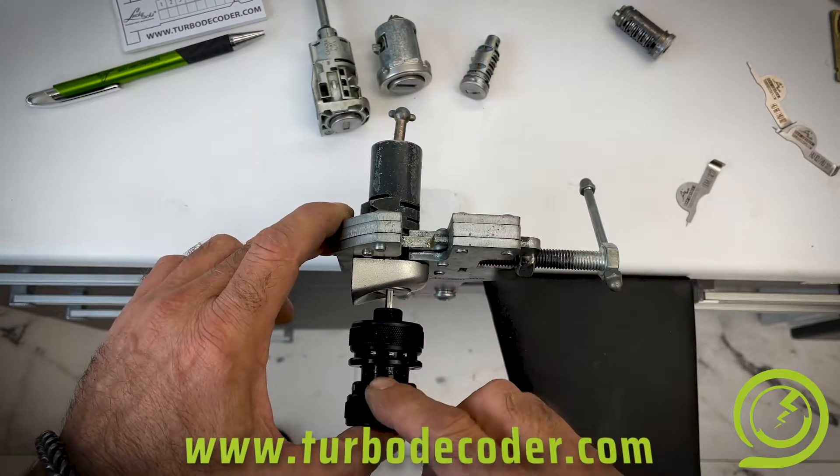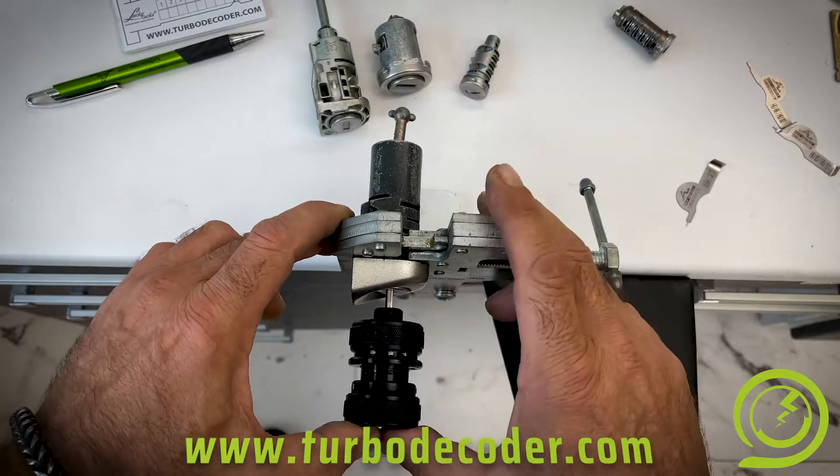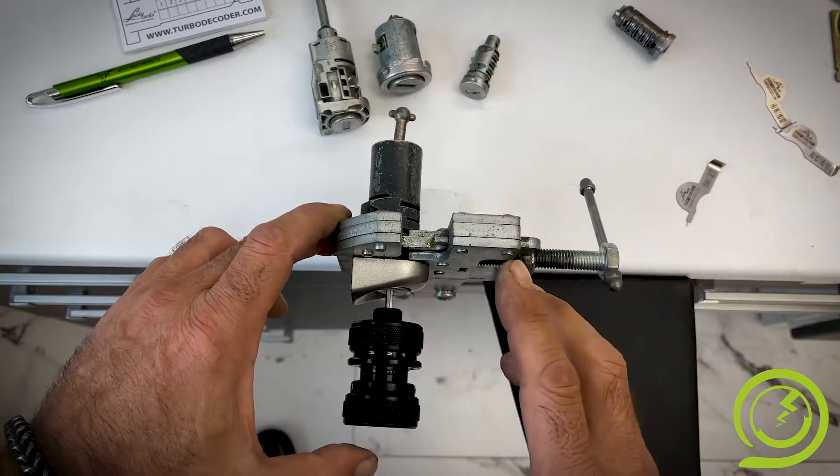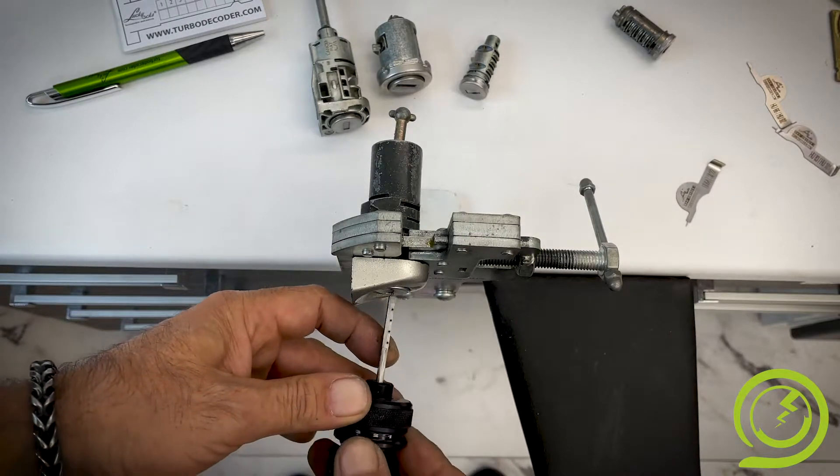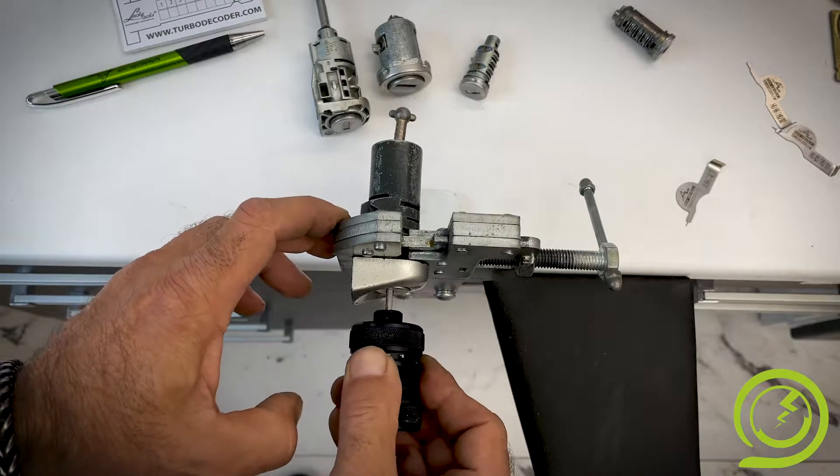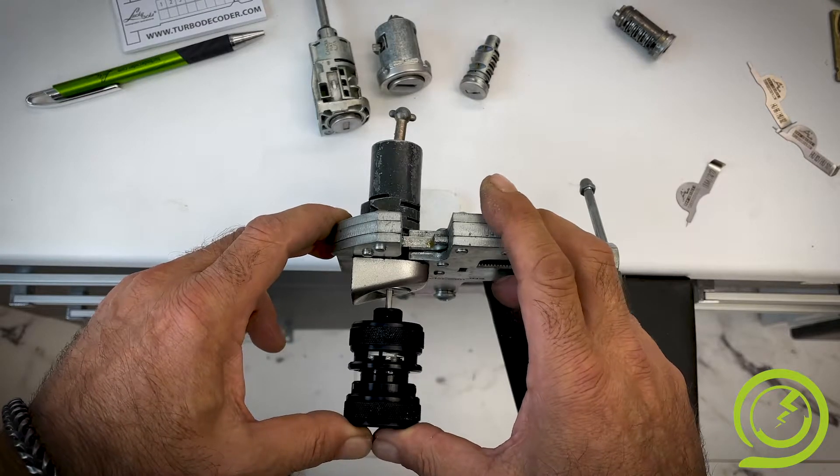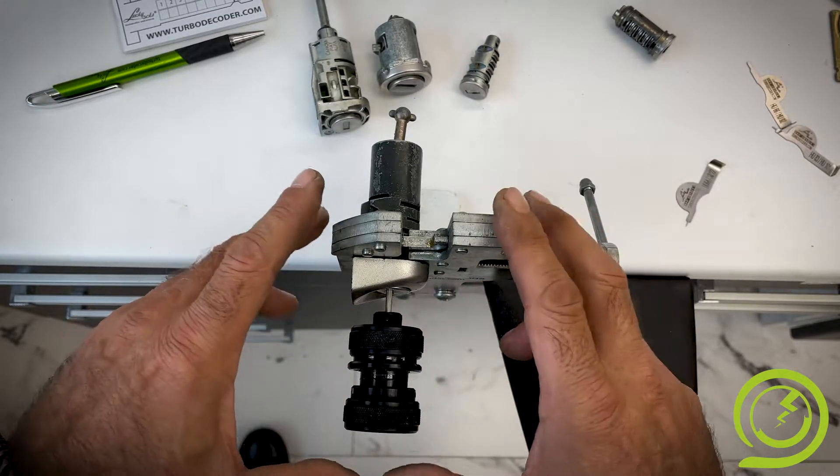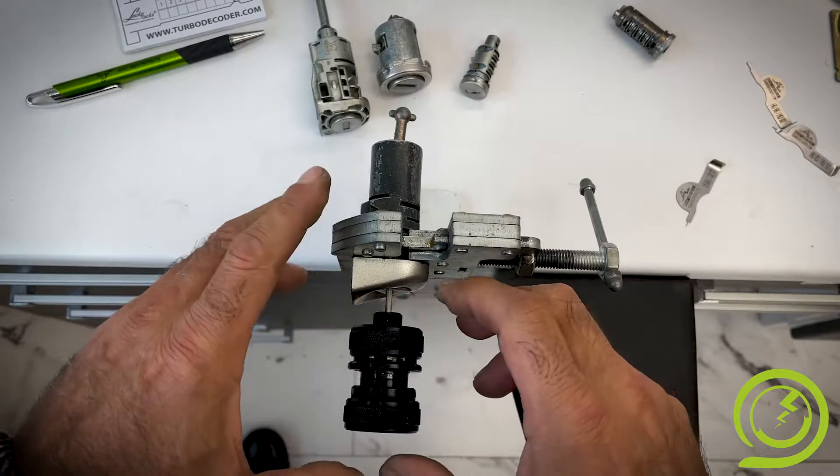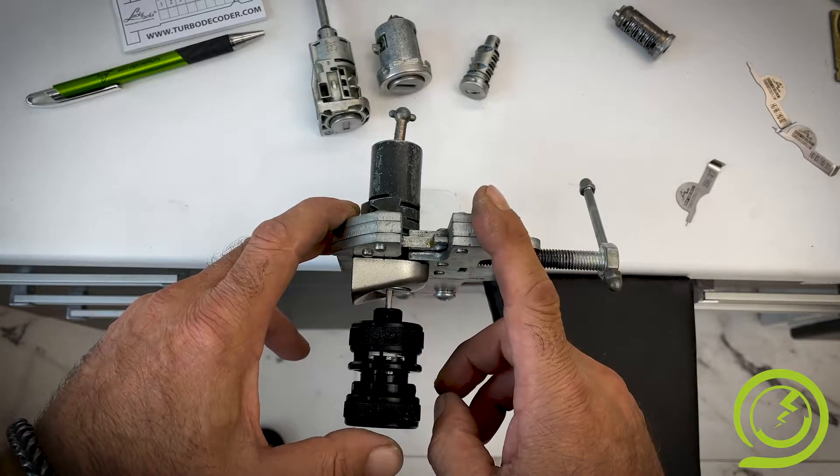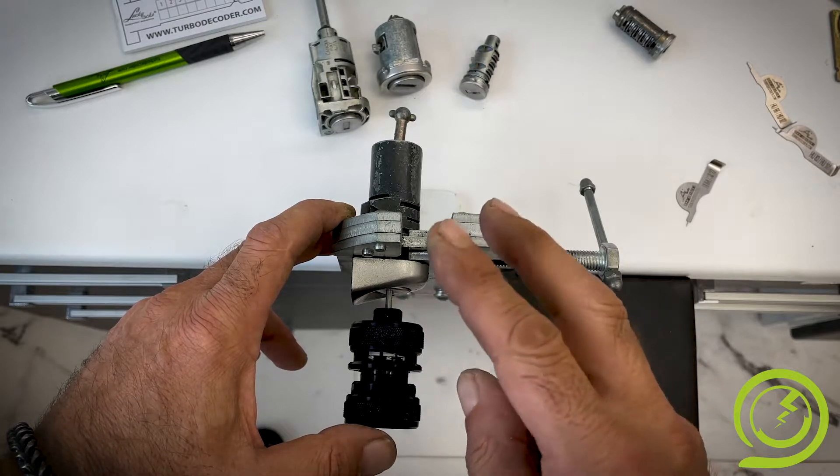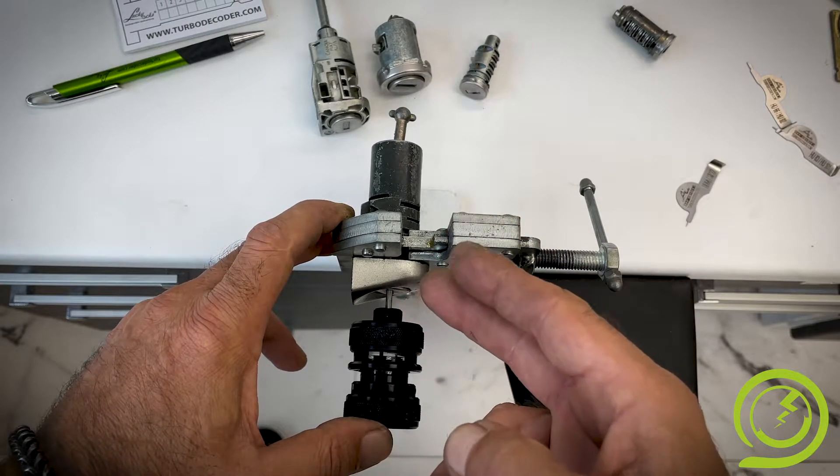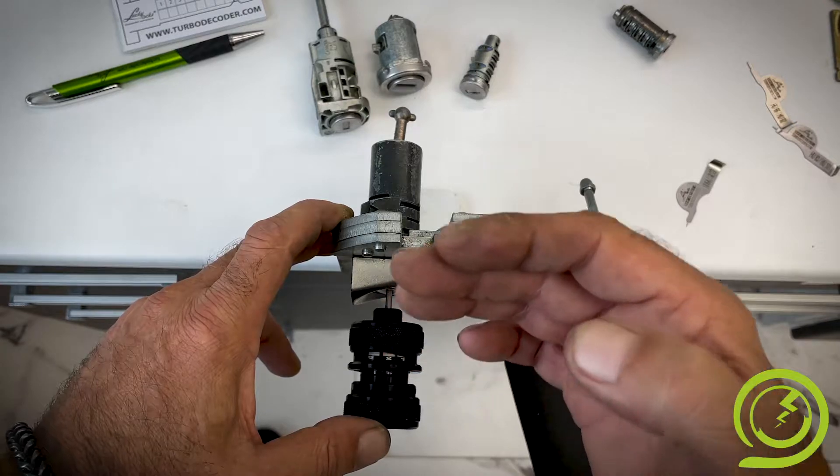If no movement on the handle, nothing moves, you have to extract the tool, reverse, insert again and check again. If you see this movement, it is indication of two things: the first thing, the orientation is not good and the second thing, you have a full cylinder with 8 discs.